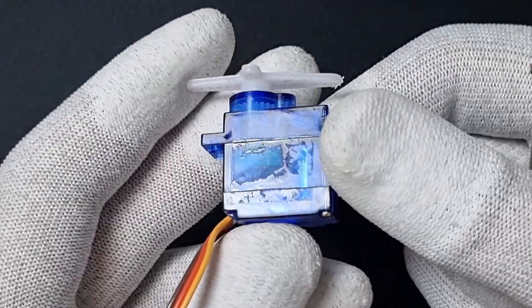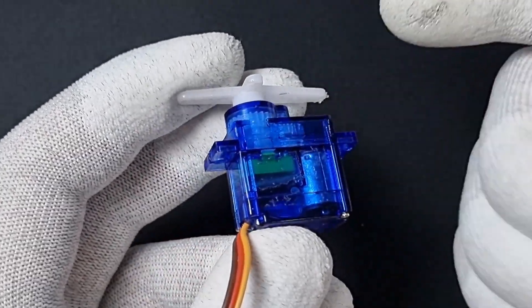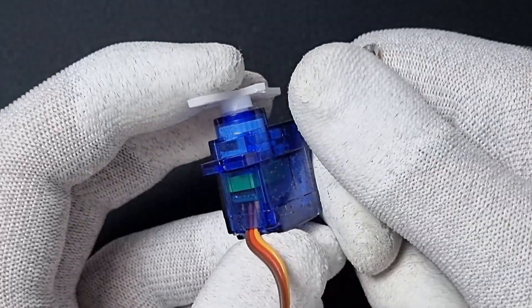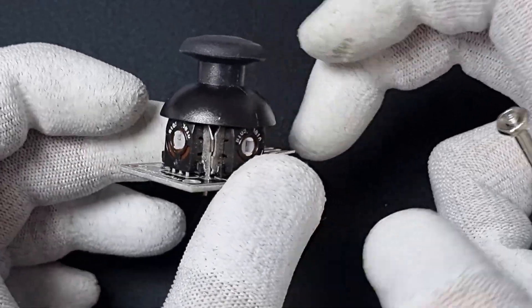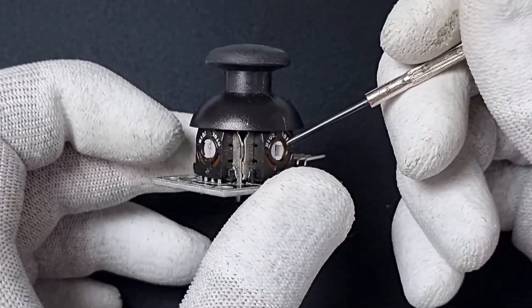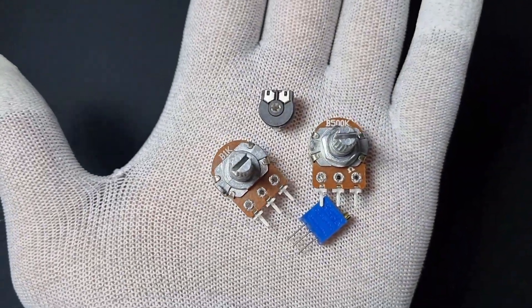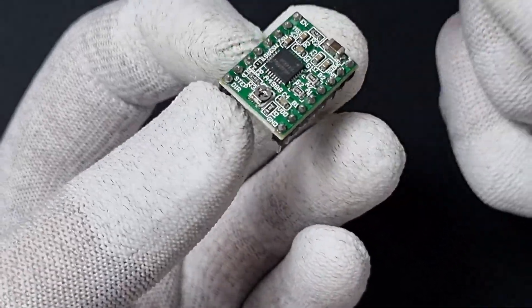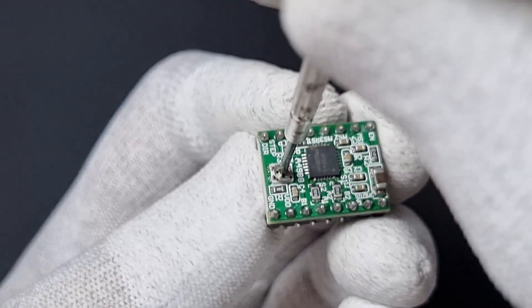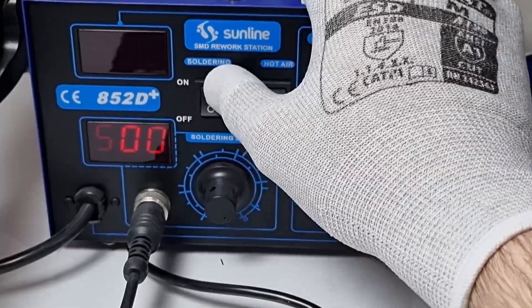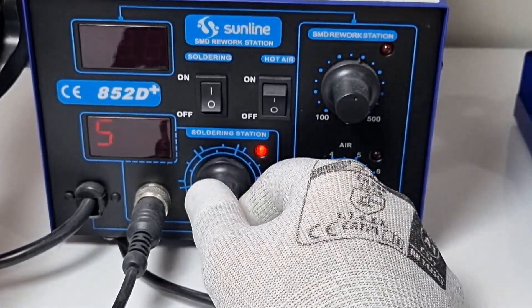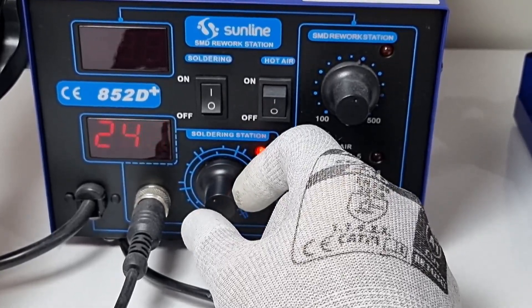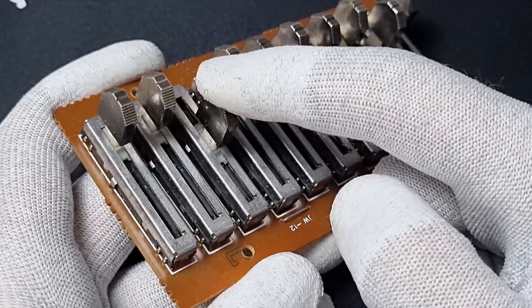So what do we use this for? Servo motors, for instance, use a potentiometer to calculate the angle of the motor shaft, and joystick modules use one to determine the position of the joystick. Potentiometers come in many variants and have various use cases. For example, this one in the A4988 stepper motor driver is a surface mounted potentiometer, while the one in my soldering station is used to adjust the temperature of the soldering iron and is in the through-hole package. Some potentiometers are also linear in design.